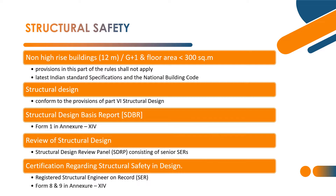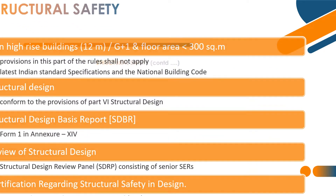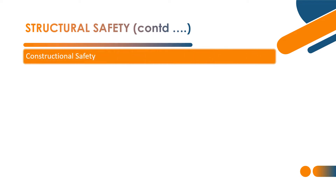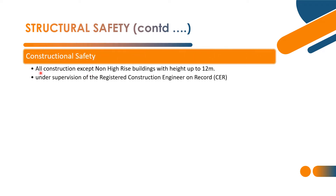Now we will talk about rule number 52. Next is constructional safety. All construction, except non-high-rise buildings with height up to 12 meters, will be under the supervision of a registered Construction Engineer on Record. Non-high-rise buildings are excluded from this requirement.